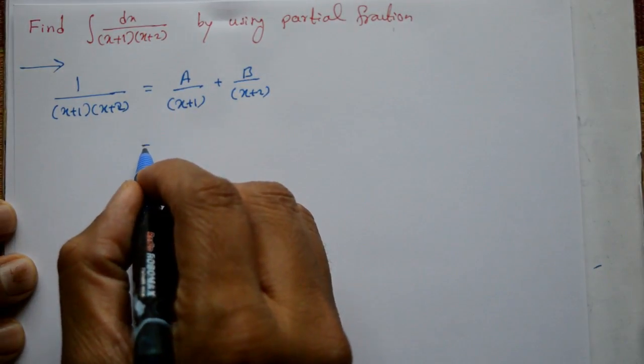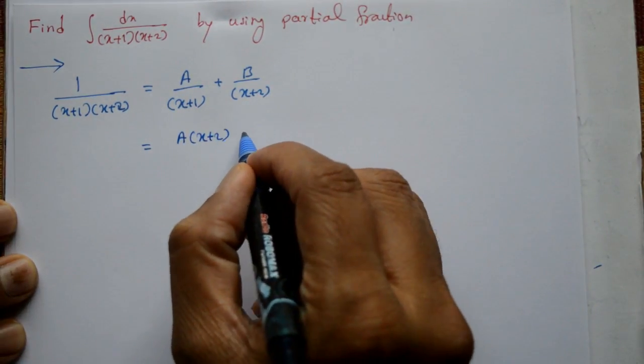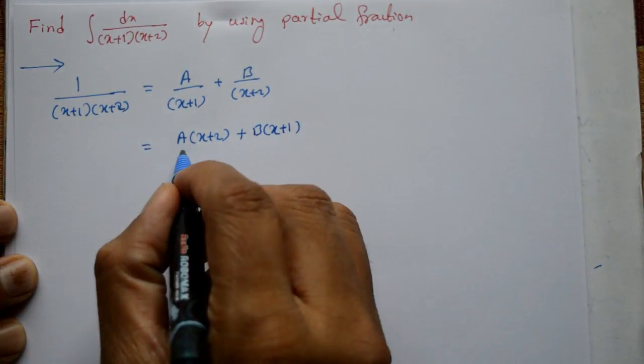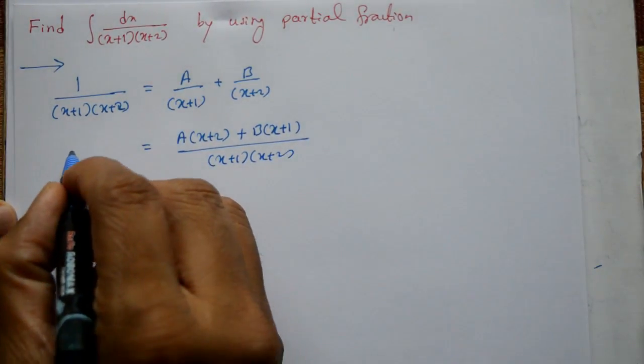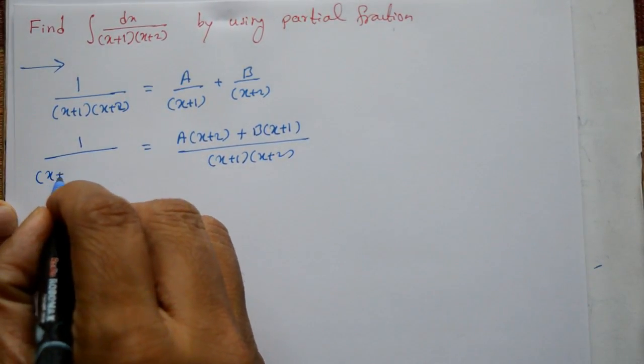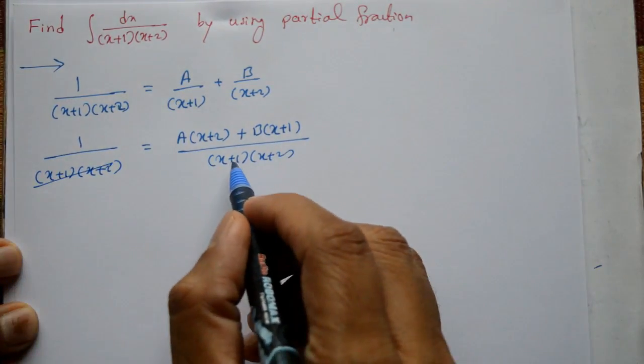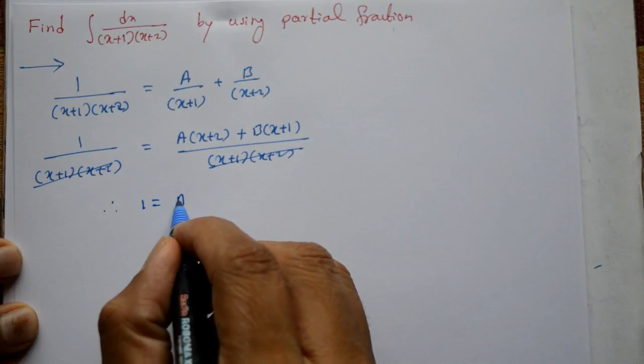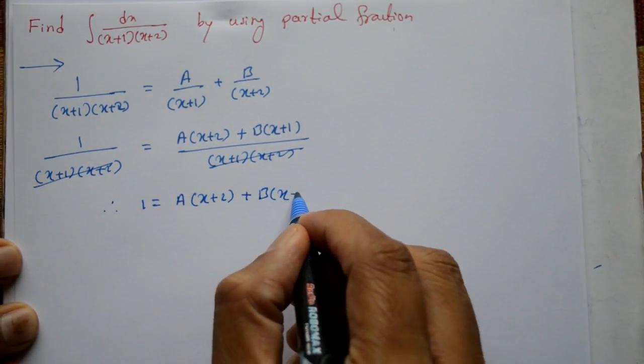This is equal to, either multiplication ho ga, A into (x+2) plus B into (x+1). Denominator kya hoga, (x+1) into (x+2). Left hand side iska rahe ga, (x+1) into (x+2). Both side dhono denominator cancel ho jae ga. Bachya kya, 1 is equal to A(x+2) + B(x+1) rahe gaya.